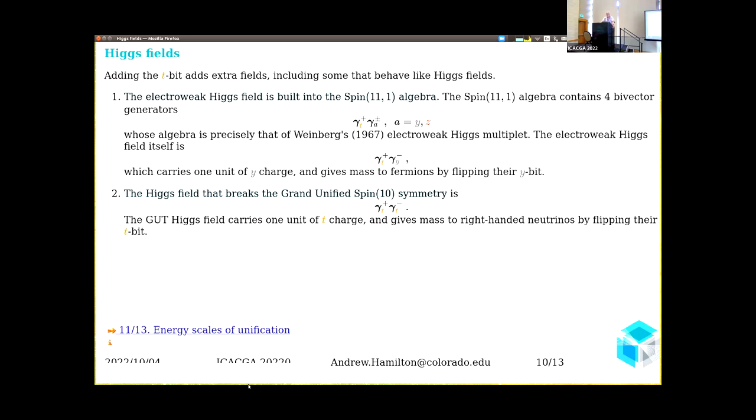It's interesting: once you've added a T bit, this extra time bit, it adds extra fields which happen to behave like some of the fields we already know. In particular, the electroweak Higgs field is built into the Spin(11) algebra. You take one of the two time dimensions—this is actually the spatial dimension associated with the time direction—make a bivector of that with the weak vectors, and you get four things whose algebra is precisely that of the Weinberg electroweak multiplet. The electroweak Higgs field itself is this particular one of that set of four, and it carries one unit of Y charge. It breaks Y symmetry and gives fermions their mass by flipping their Y bits, completely consistent with the standard model.